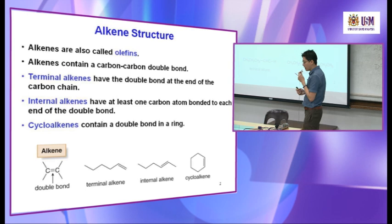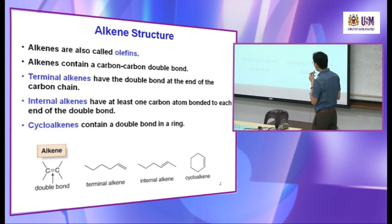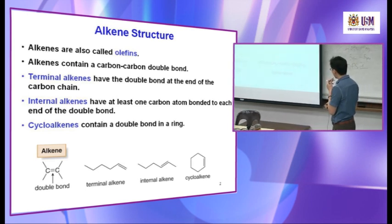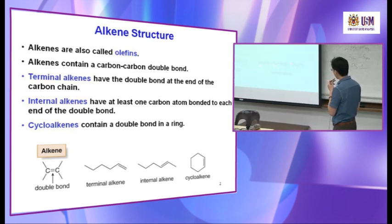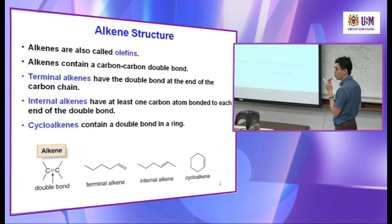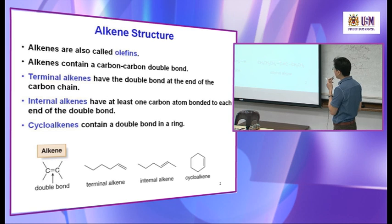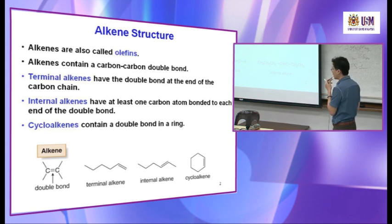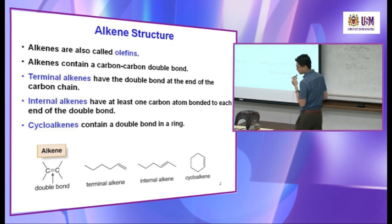An internal alkyne has the alkyne group sandwiched by two alkyl groups — it's not at the end but in the middle of the chain. This is called an internal alkyne.